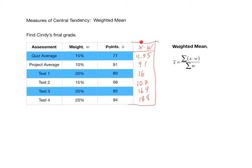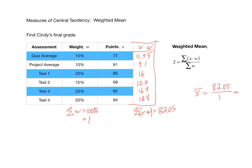We've found all the x times w products. We need to find the numerator value by taking the sum of all those x times w's, which gives us 82.05. Now we divide by the sum of the weights. Adding those percentages gives us 100%, which is equivalent to 1. So x-bar equals 82.05 divided by 1, which is 82.05.